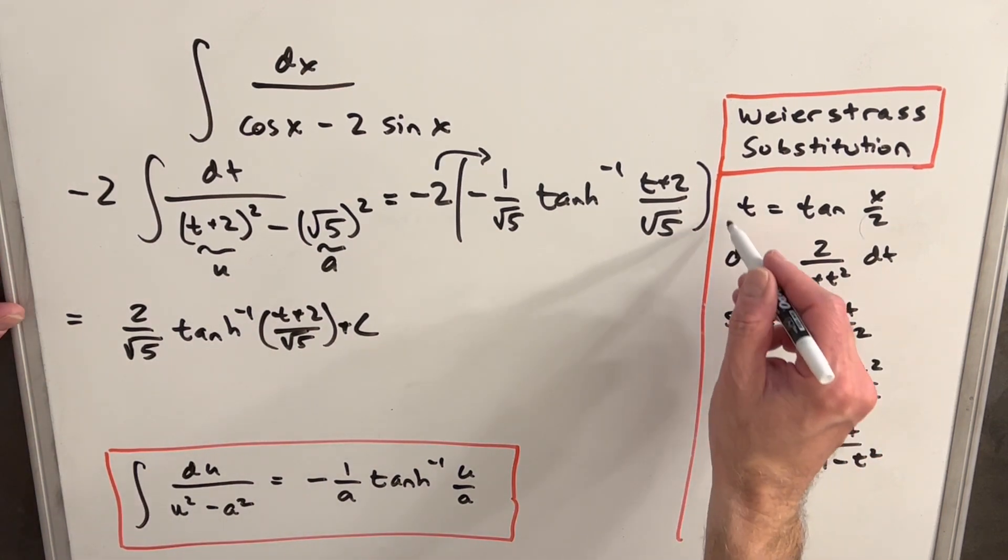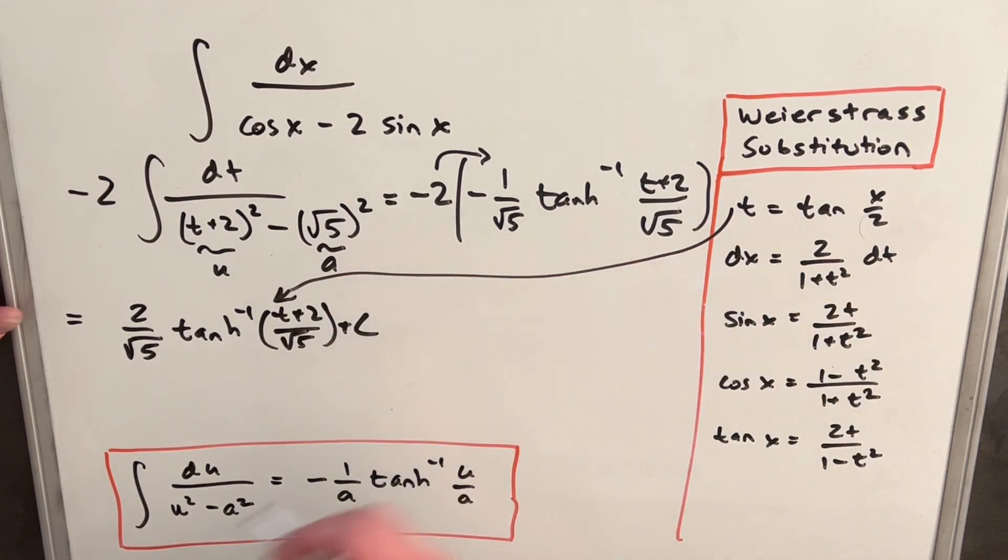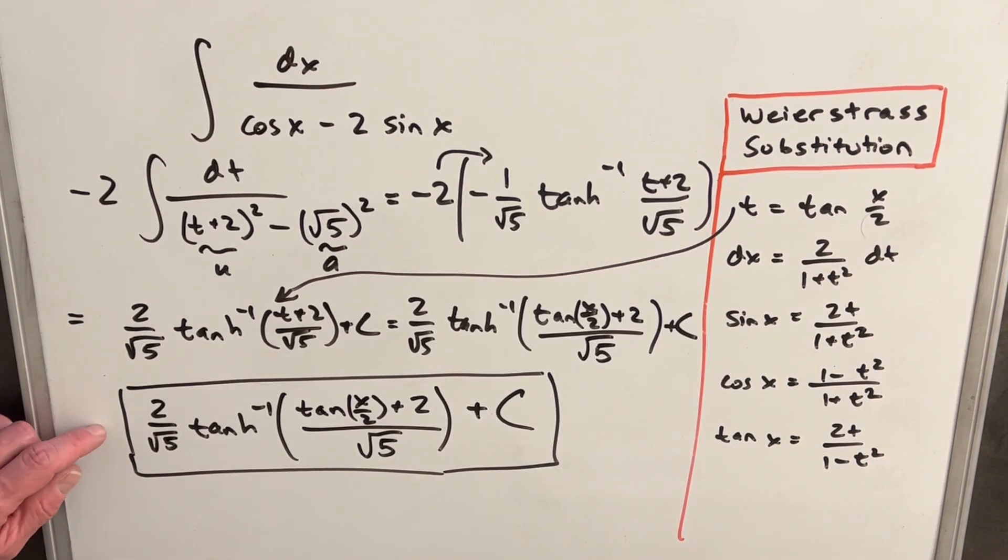For our last step, we just need to back substitute. We have our t over here - that was our original substitution. So that's going to be our final solution right there. Yes, it's kind of a mess, but it has everything in it and it's correct. Thank you for watching. Please like and subscribe. Have a great day.